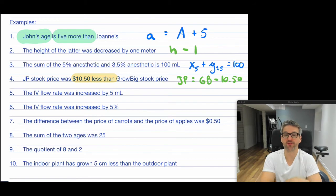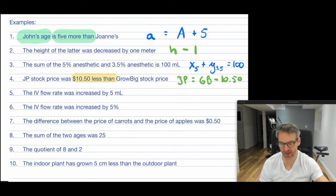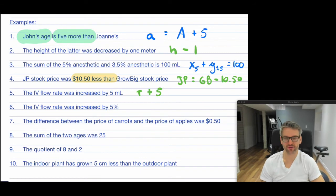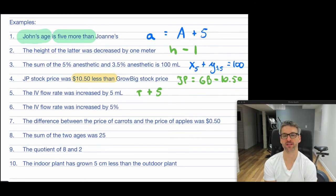For number five: "The IV flow rate was increased by 5 milliliters." So whatever the flow rate was — let's say R — it was increased by 5. So R plus 5. That's it. The rate is increased by 5 milliliters.